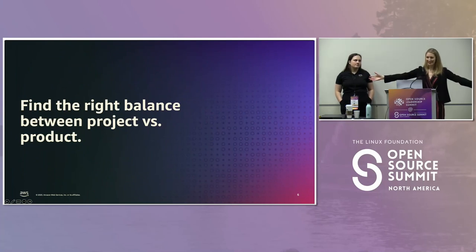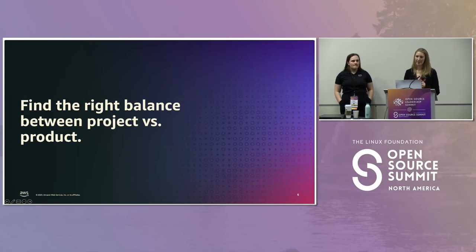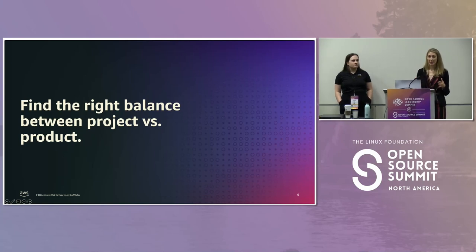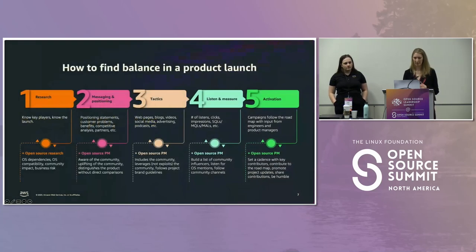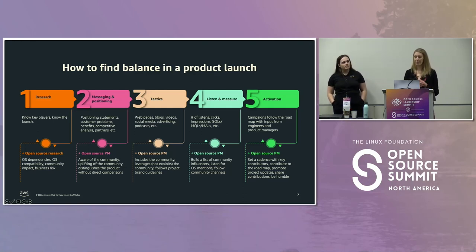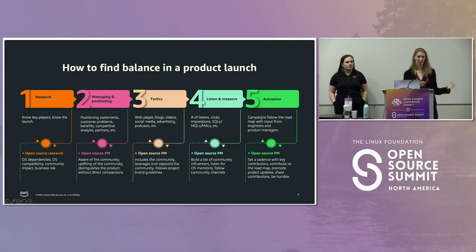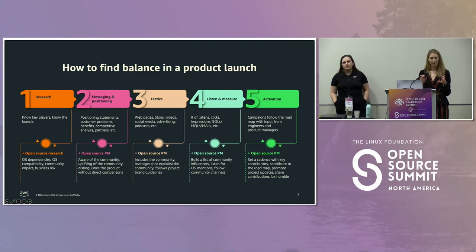The key is finding the right balance. If I want you to take anything away today, that's the key message: find the right balance between project and product, and integrate open source project marketing into every aspect of your marketing activities. Ideally, you're walking the right balance between promoting your product and promoting the projects you're built on. You can build open source practices and considerations into every part of your product marketing strategy. Today, for the purposes of this talk, we're going to focus on launches — but you can use these practices in any kind of activities you're doing.